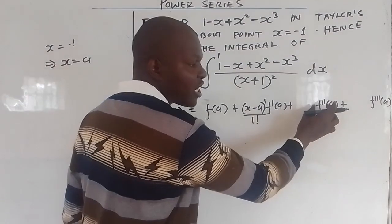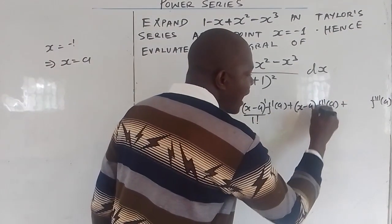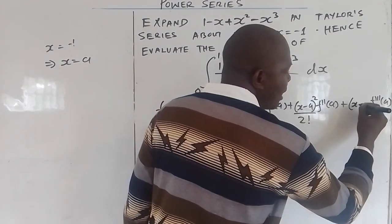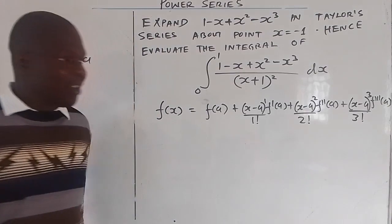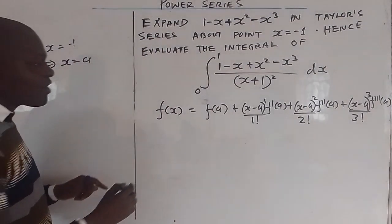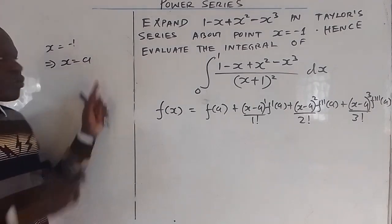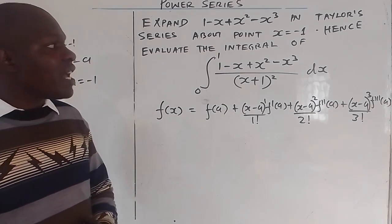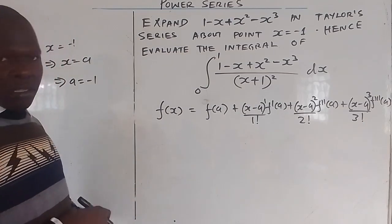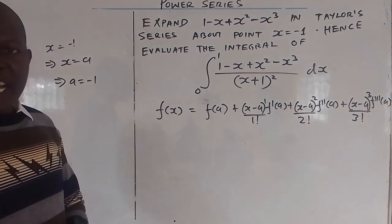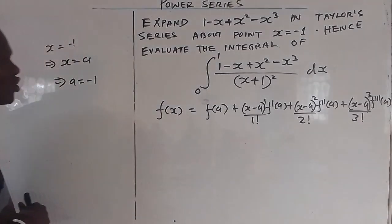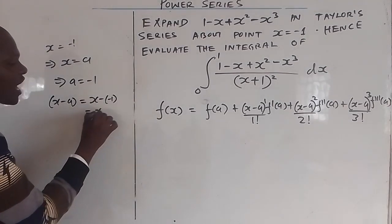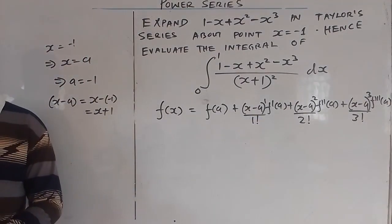If you differentiate f of a for the first time, x minus a is raised to power 1 over 1 factorial. If you differentiate for the second time, x minus a is raised to power 2 over 2 factorial. For the third time, x minus a is raised to power 3 over 3 factorial. You've been told x equals negative 1, so a equals negative 1. Where there is a, you put negative 1.